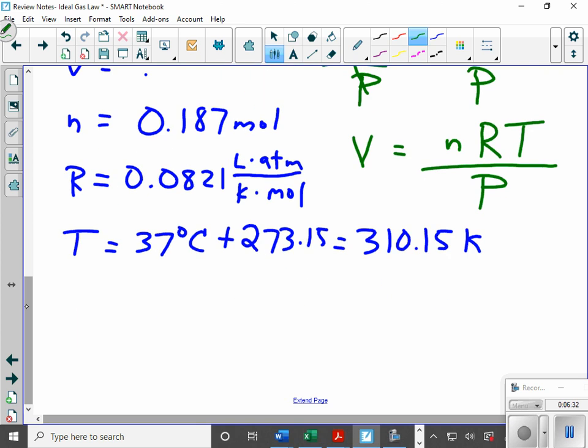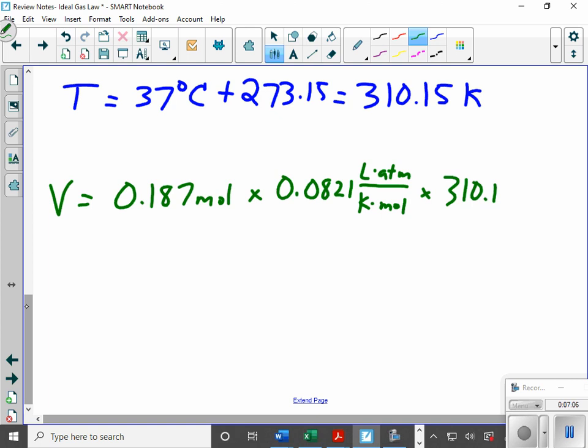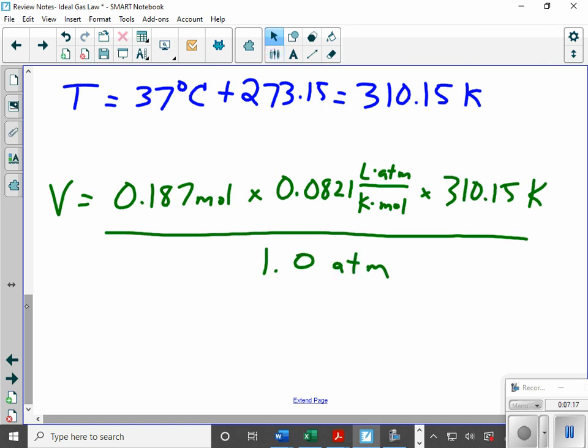So now, I just need to use that equation to get my answer and plug in my numbers. My number of moles were 0.187 moles. My R was 0.0821 liters times atmospheres over Kelvin times mole. My temperature was 310.15 Kelvin. All over my pressure, which was 1.0 atmospheres. Now when I go through and do my canceling, mole on top, mole on bottom,